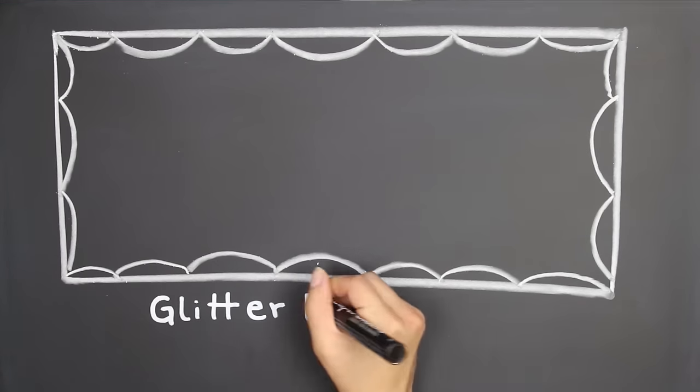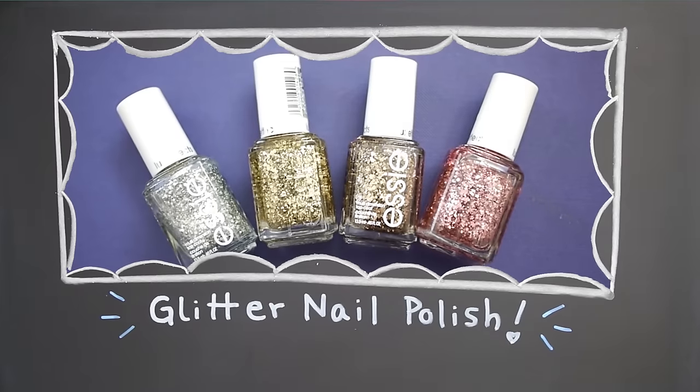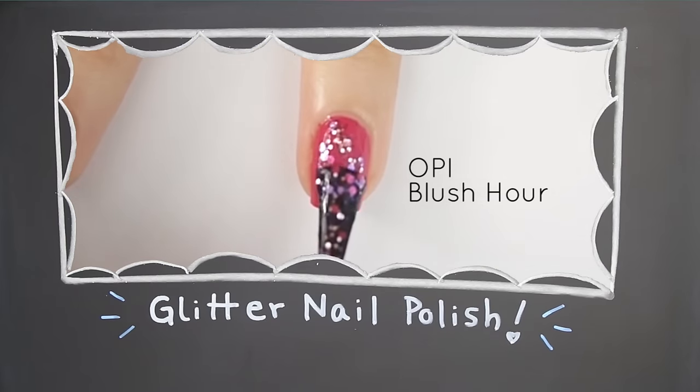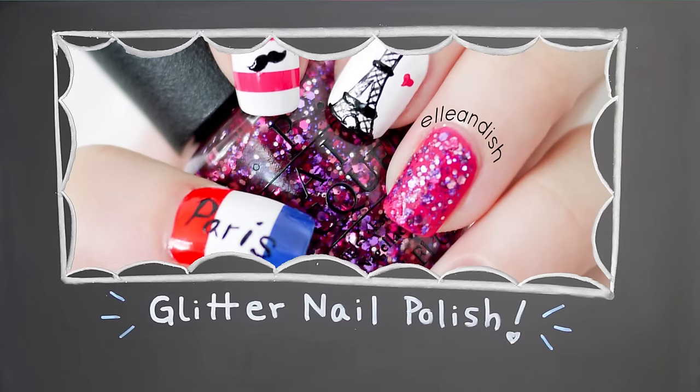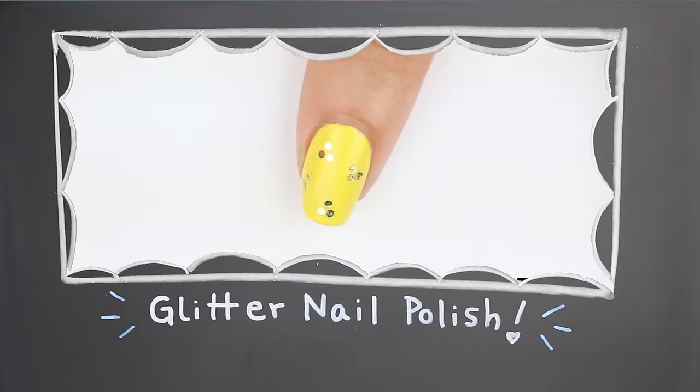Next up is glitter nail polish. Even if you use a single nail polish color, glitter is an easy way to add interest to your look and you can do so many things with them and you can find them at any drugstore. If you've seen my channel before, you know that I love chunky glitter as an accent nail for a bit of shine. Or you can do a glitter gradient or even place the glitter bits in specific patterns too.